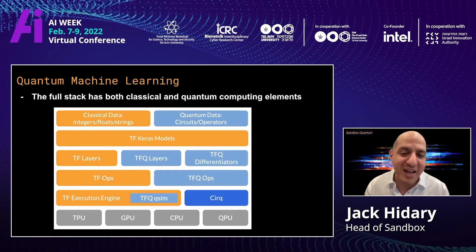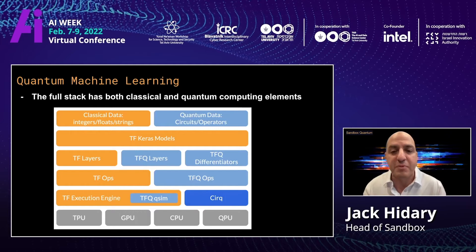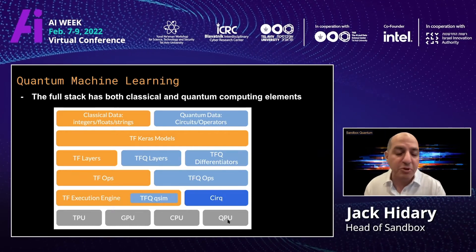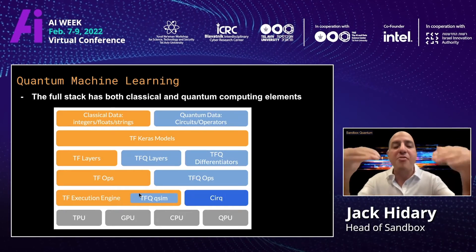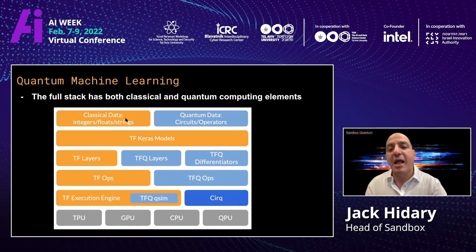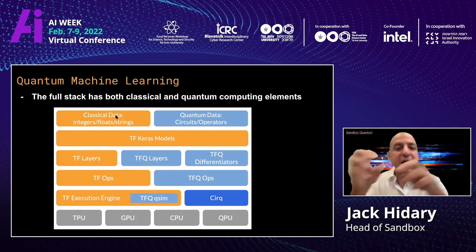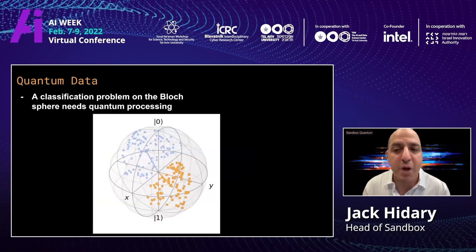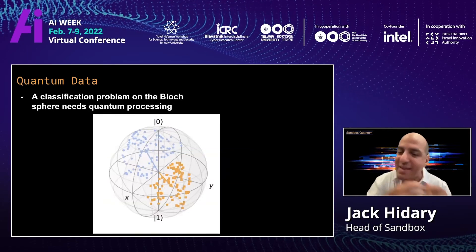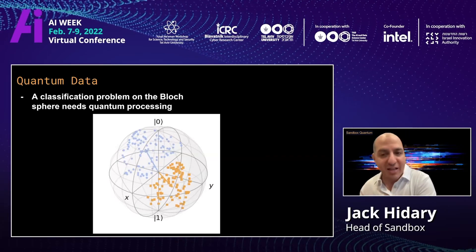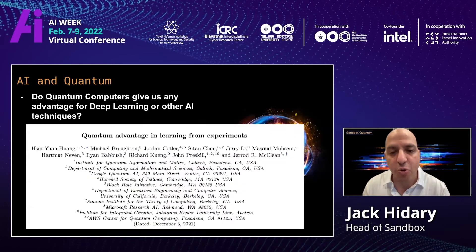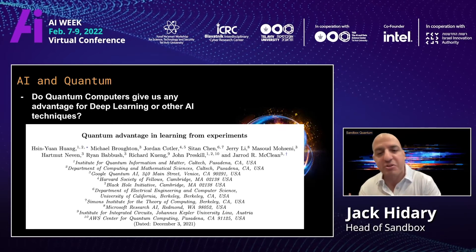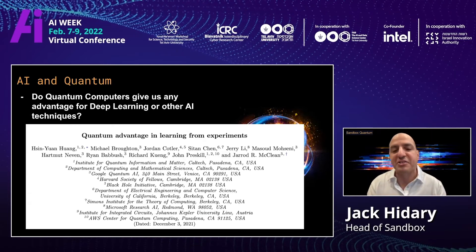One example of a full stack — I pulled this from TF Quantum, TensorFlow Quantum, though there are others — shows on the hardware substrate various classical processing units but also QPUs, quantum processing units. Built on that substrate, we can use a variety of frameworks and modeling, and ultimately apply that to both classical data and quantum data. This is where the future is going — a hybridization of classical and quantum. You can imagine classification problems on the Bloch sphere that will need quantum processing; we cannot analyze these types of classifications using classical means.